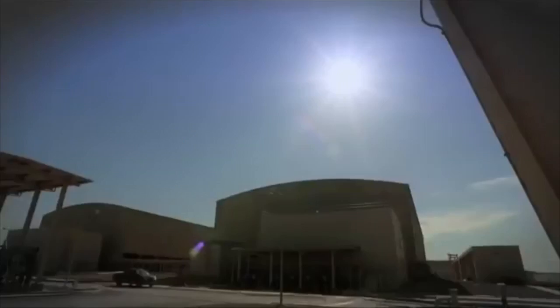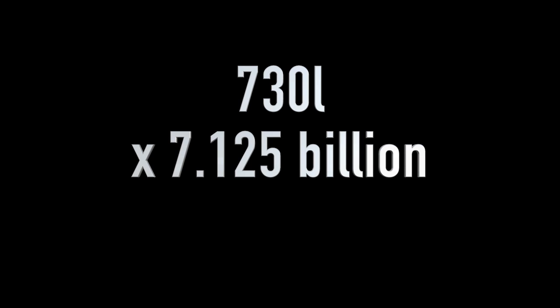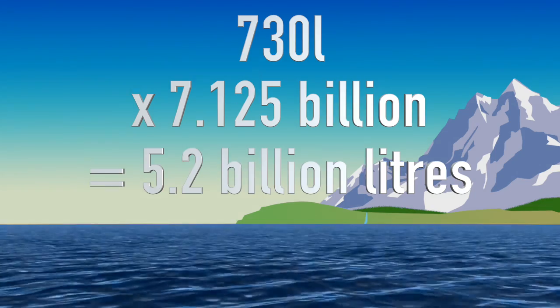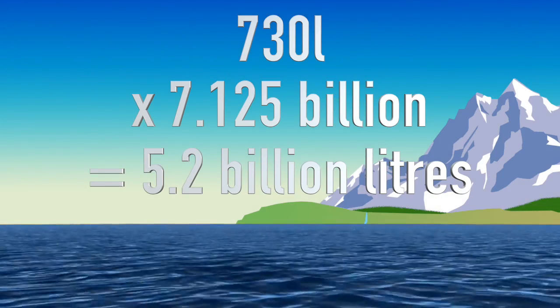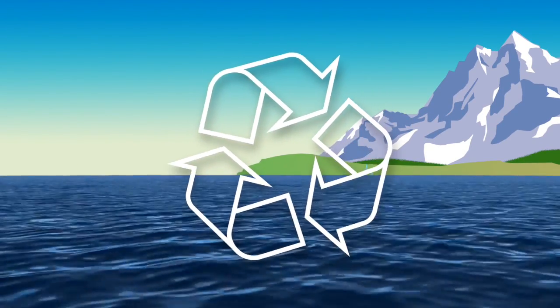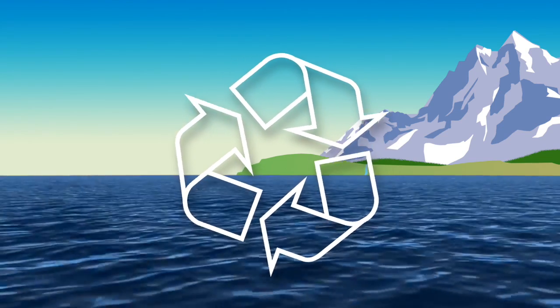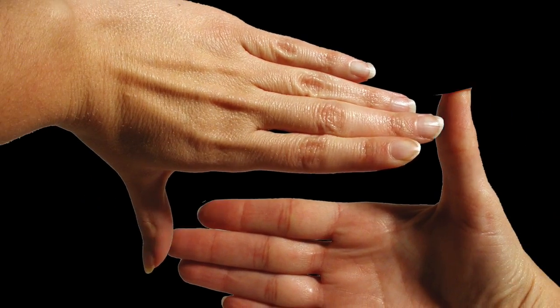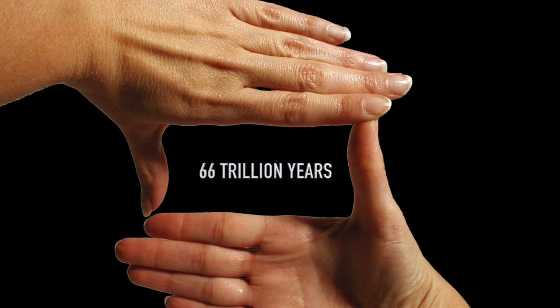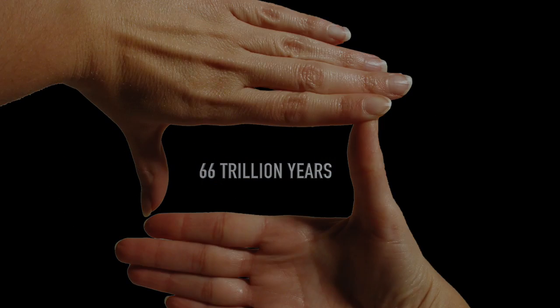No longer would there be a 100% reliance on a singular water company supplying clean water to an entire city. Taking that 730 liters times the amount of people currently on Earth, you get just over 5.2 billion liters of water drunk per year — and when talking about the water cycle, that's not even close to one cubic kilometer.